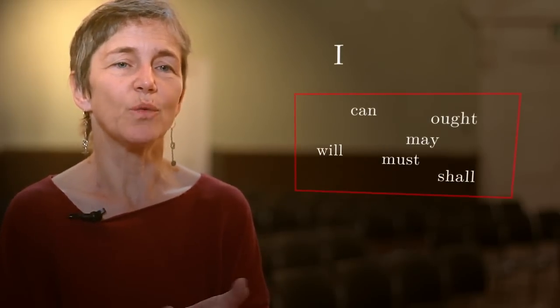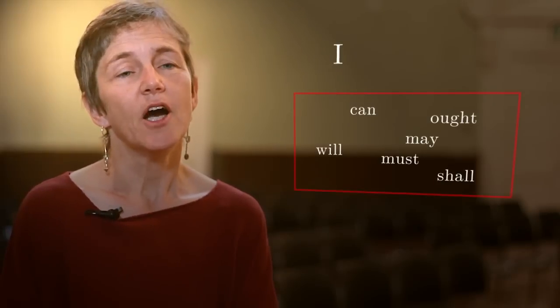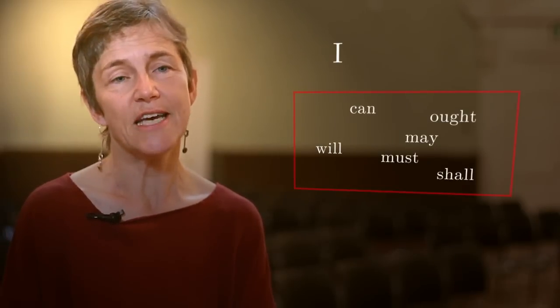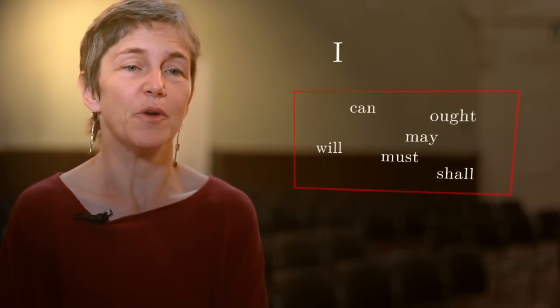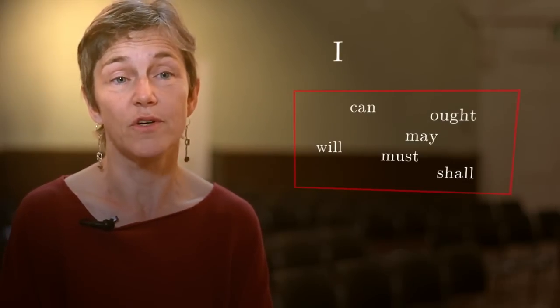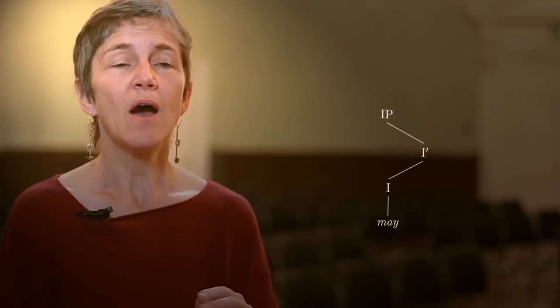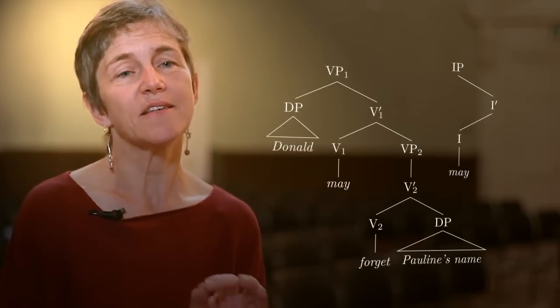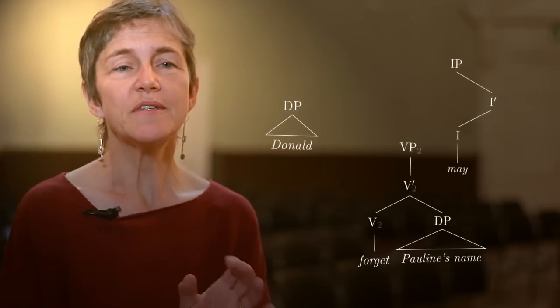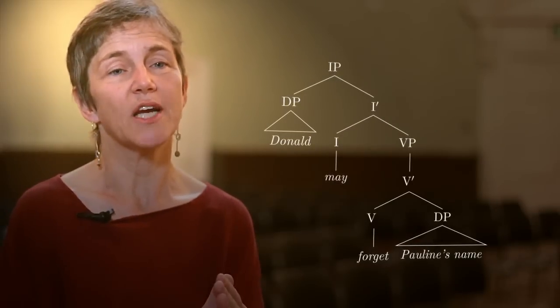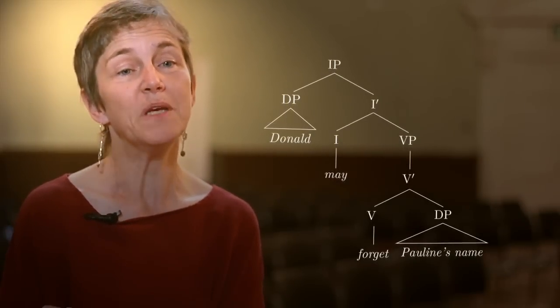An alternative category sometimes proposed for modals is T for tense. For now we'll stick to the hypothesis that it's I, but the distinction isn't that important at the moment. So modals are of category I for inflection. Following X-bar schema, they project an I-bar and an IP. So instead of saying the modal is a verb taking another VP as its complement, we say the modal is an I category, it projects an I-bar, and that I takes a VP as its complement. A sentence, rather than being a VP, is an IP containing a VP.